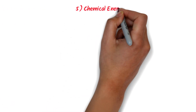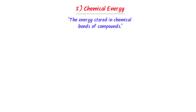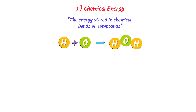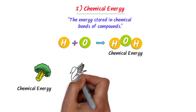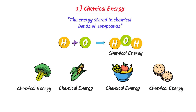The fifth form of energy is chemical energy. The energy stored in the chemical bonds of compounds is called chemical energy. For example, we all know that when oxygen and hydrogen react together chemically, water is formed. There is energy stored between the oxygen and hydrogen bond — this energy is known as chemical energy. Remember that whatever we eat contains chemical energy. For example, all vegetables, all pulses, all fruits, all snacks contain chemical energy. Thus note that all substances contain stored energy, or chemical energy.